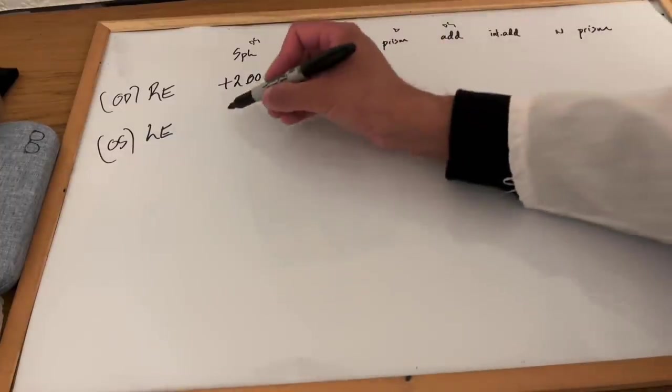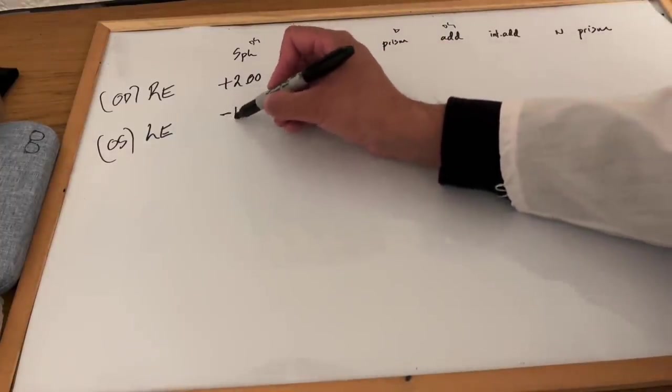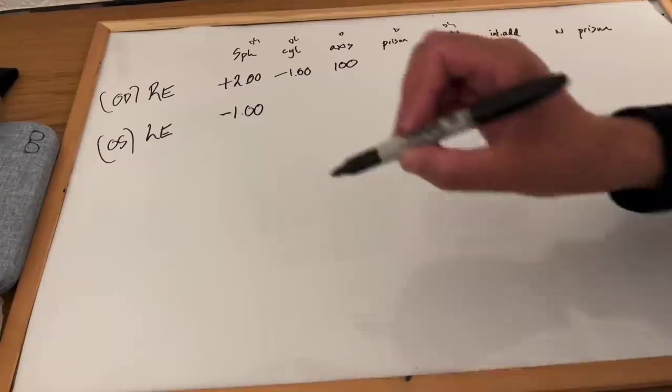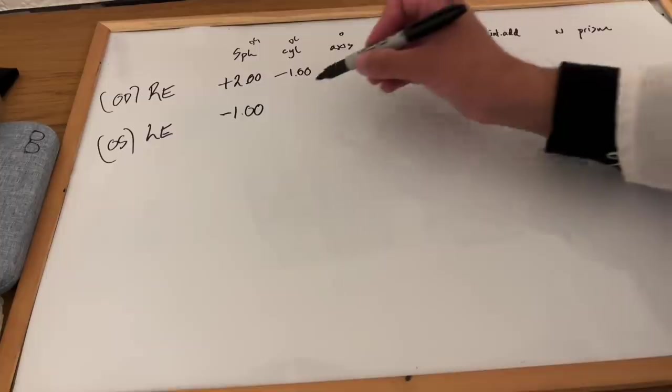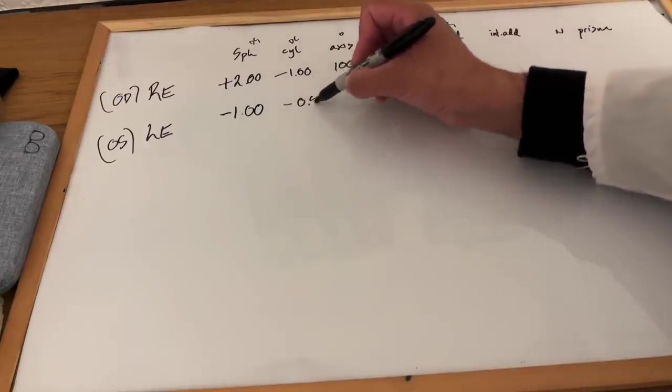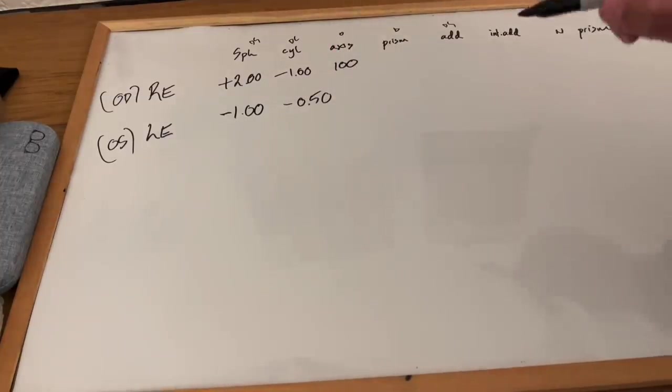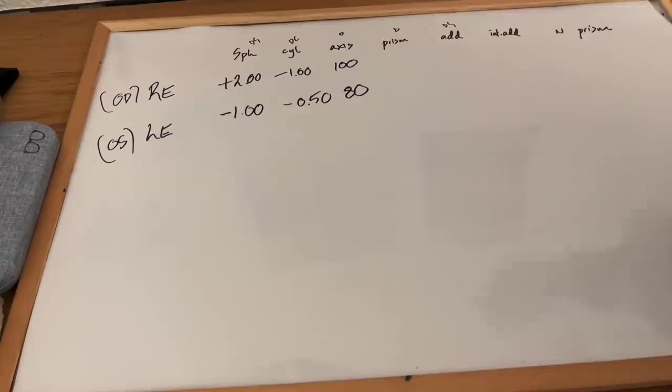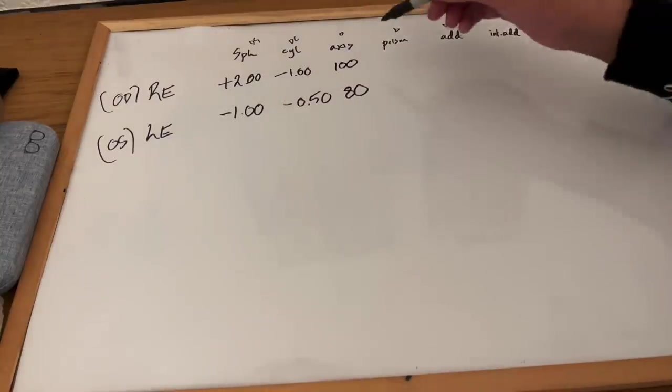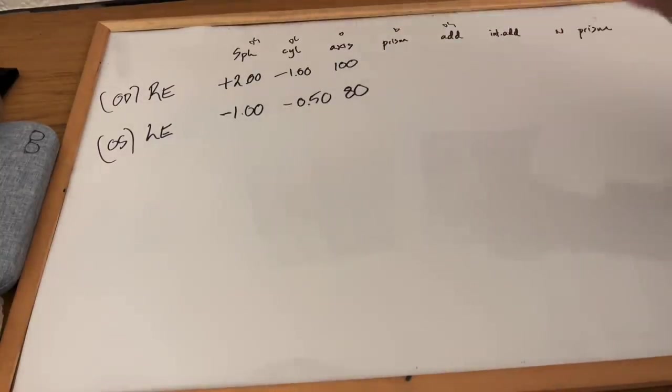And in the left eye, let's change it up. You are a minus one sphere and you have a cylinder minus 0.50 that sits at an axis of 80 degrees. So that is your prescription.